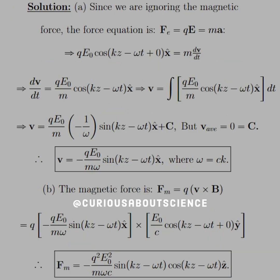Since we are ignoring the magnetic force, the force equation is F_E = qE, and that sums to ma. We have qE₀ cosine(kz − ωt) x-hat equal to m dV/dt. Solving for dV/dt, we have qE₀/m cosine(kz − ωt) in the x-hat direction.